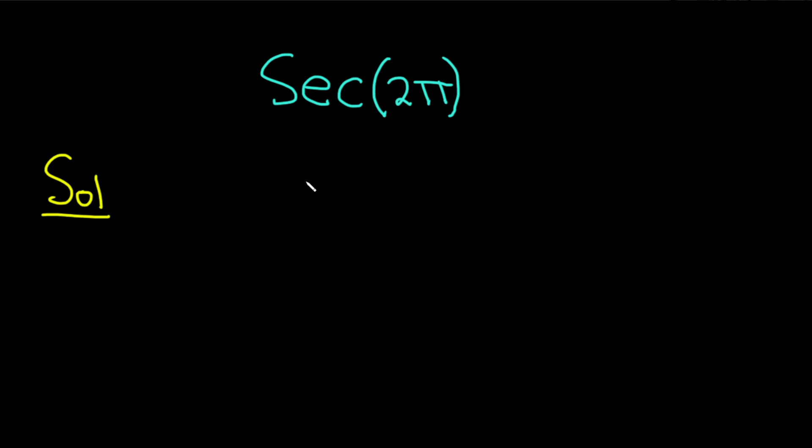So the first thing we should be aware of is that the secant of x is equal to 1 over the cosine of x.